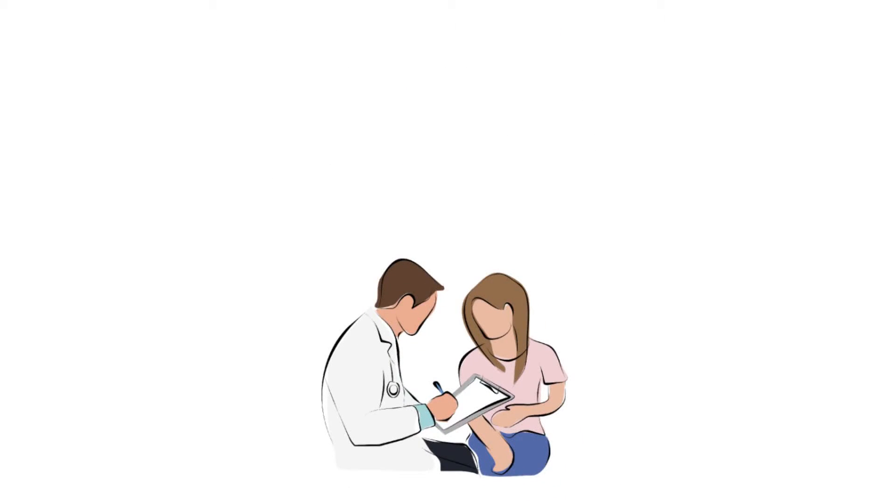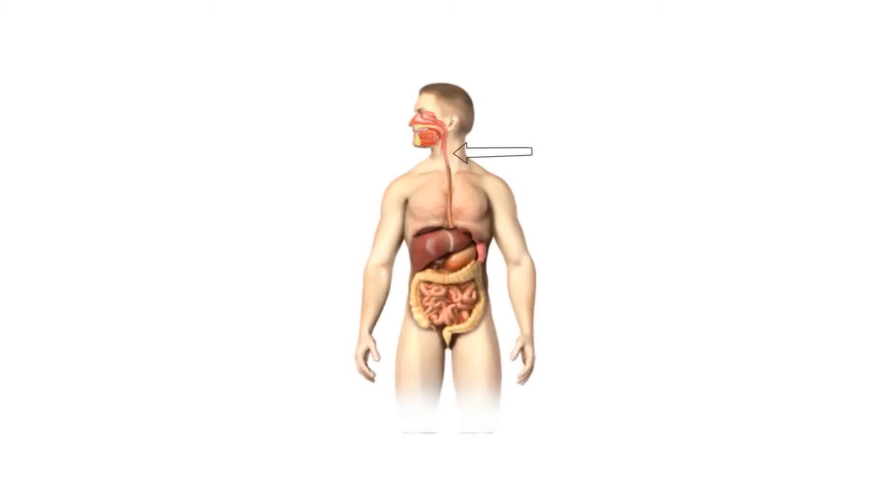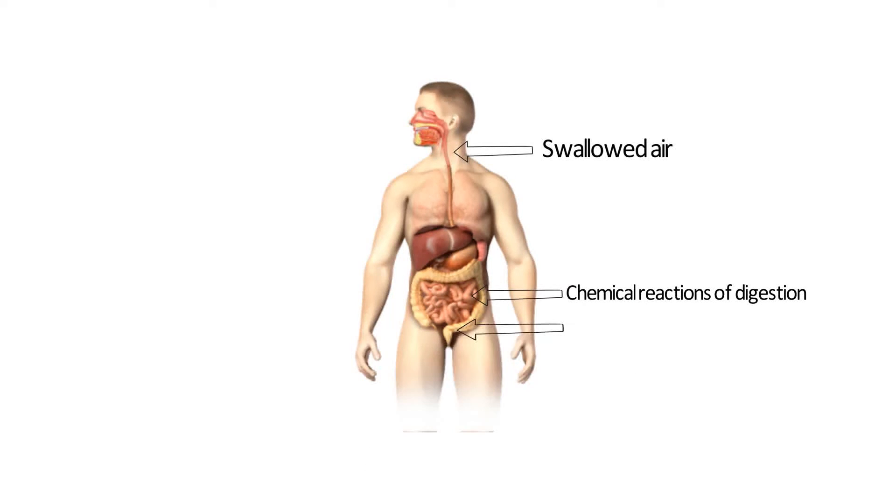There are other preconceptions. When troubled by bloating, excessive wind and distension, both patients and doctors intuitively implicate increased intestinal gas as the causative factor. After all, there is a lot of gas flow through the gastrointestinal tract. This is derived from swallowed air, gas produced by chemical reactions of digestion, and the gas generated by the billions of bacteria that inhabit the colon.